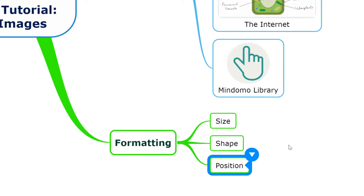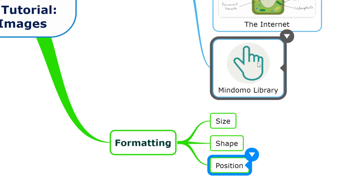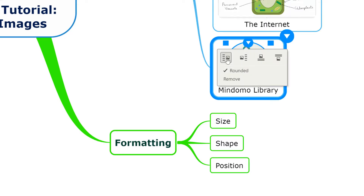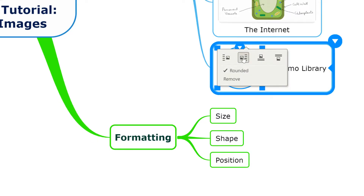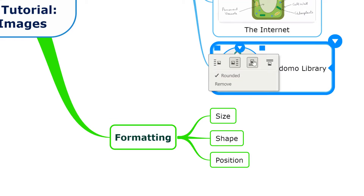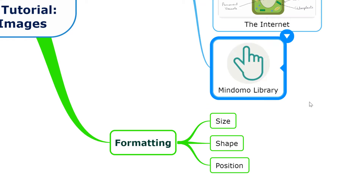One final option is to change the position of the image in relation to the text. For example, back to this image again, we can say let's change this to be on the left of the text, as you can see there. Or again, we can re-change that to say above the text, however we want. So within the topic, we can move the image around, we can resize it, and we can even reshape it.